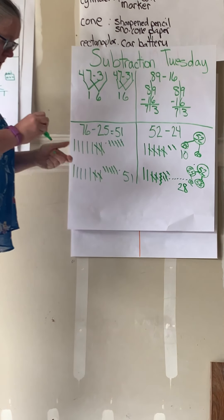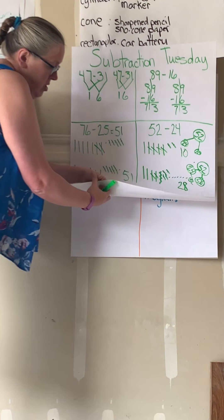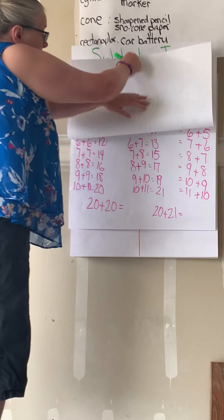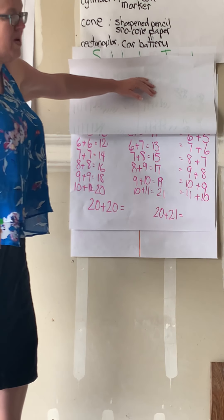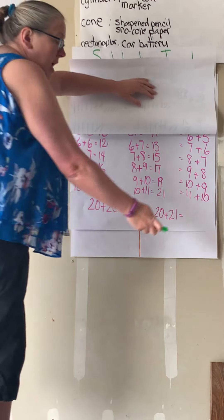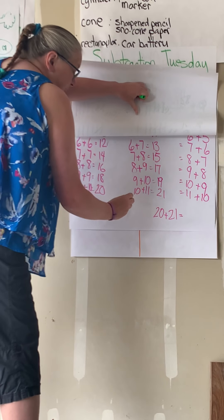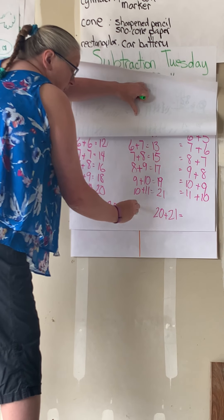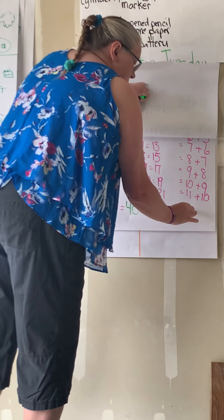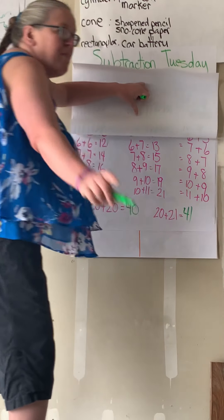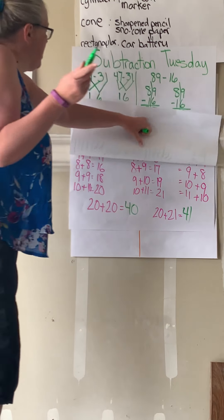Yesterday we had a couple of problems. We were adding doubles — double digit doubles. So 20 and 20: well, 20 plus 20 is 40. And if I add a double plus one, I have 40 and just have to add one more. I bet some of you got those answers right.